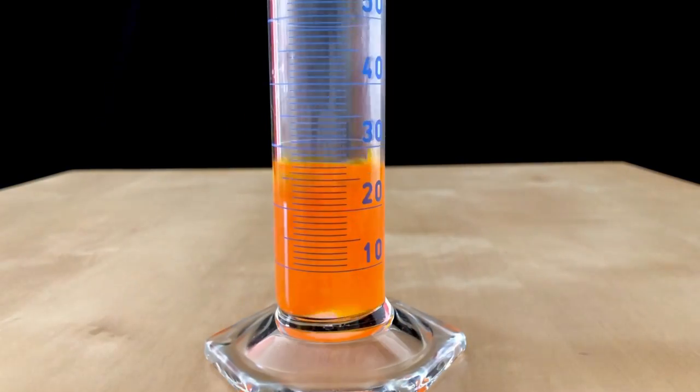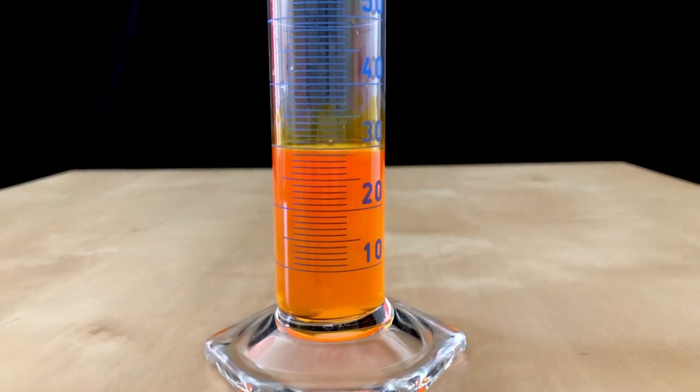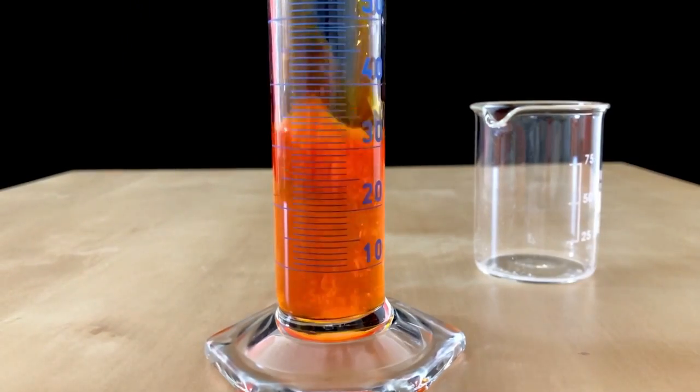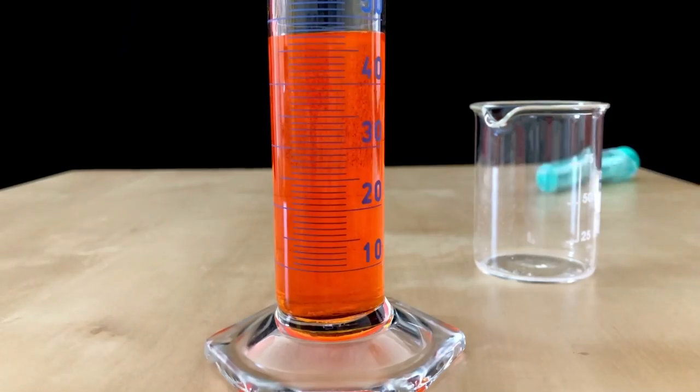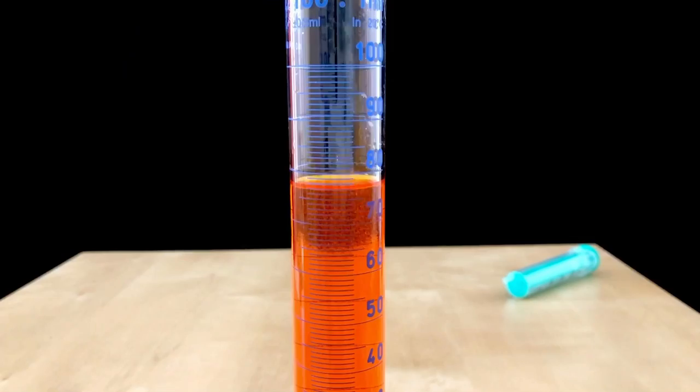When both of the solutions are combined you get this beautiful orange color. We continued by adding 20 more milliliters of glacial acetic acid followed by enough water to fill up the measuring cylinder to the 100 milliliter mark.